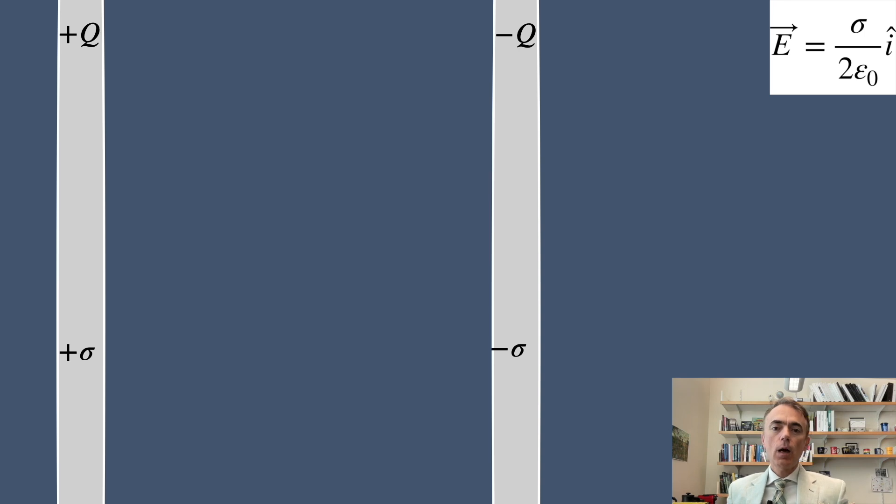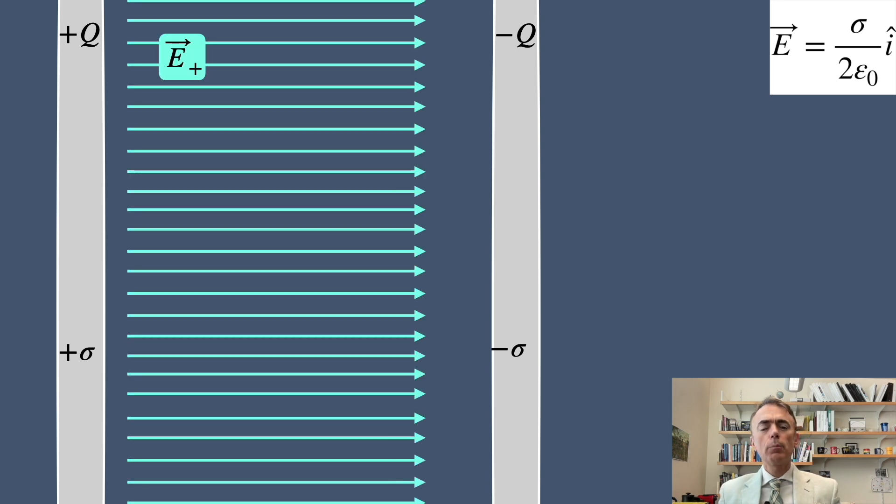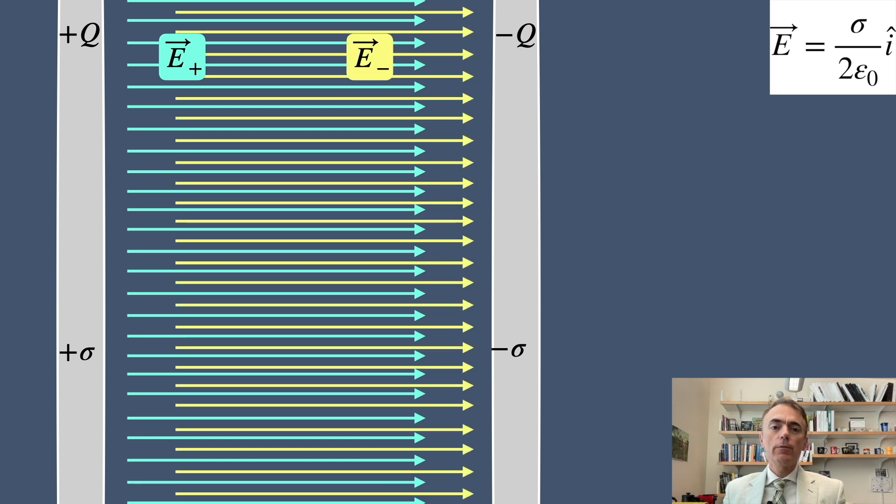Let's look at how these electric fields combine. Each plate generates an electric field perpendicular to its surface. The positive plate creates a field pointing away from its surface and the negative plate creates a field pointing towards its surface.